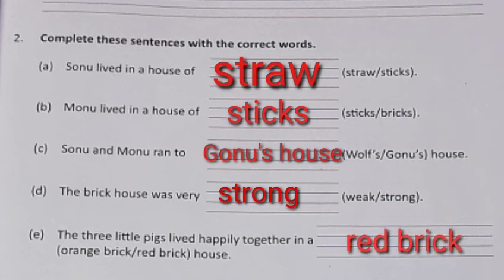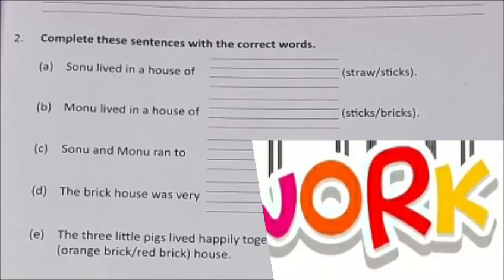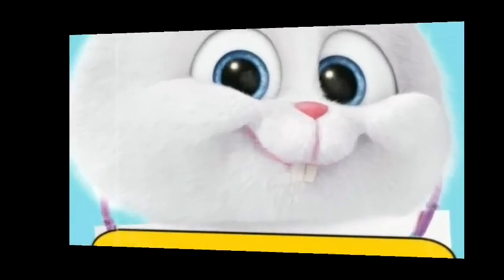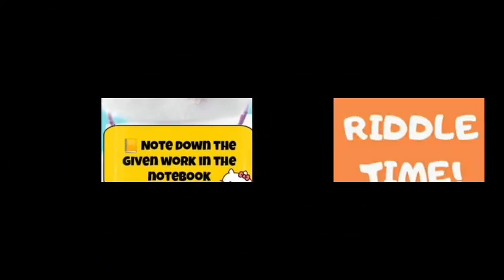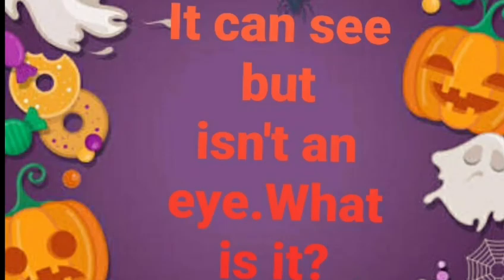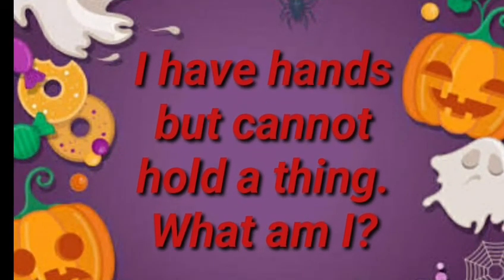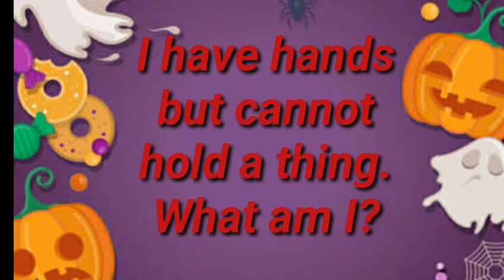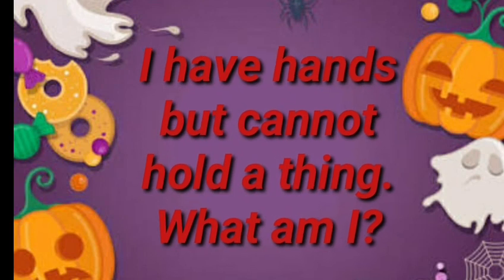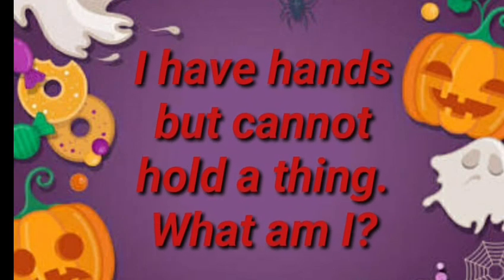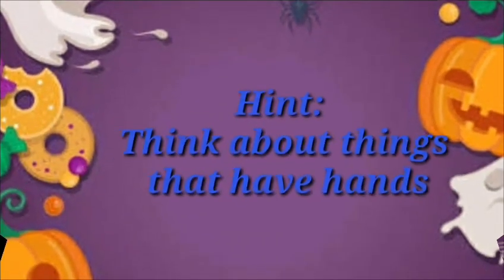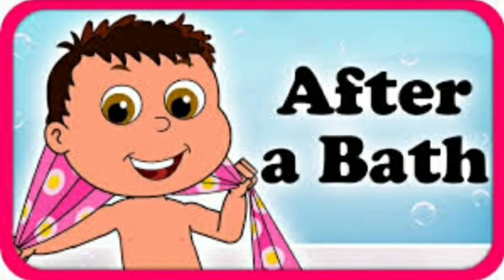The rest of the pages we will do in class. Homework time — children, note down the work given in the PDF. Riddle time: previously I asked, 'It can see but isn't an eye' — the answer is a keyhole. Today's riddle is: 'I have hands but cannot hold a thing. What am I?' Think about it! In the next video we are going to read a poem: After a Bath. Till then, bye bye!